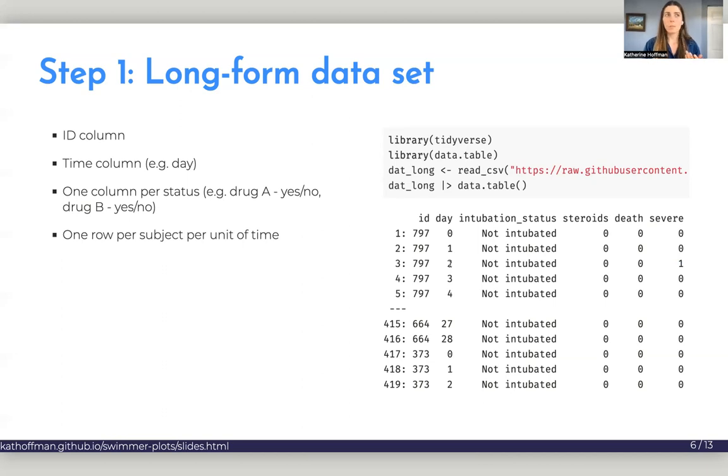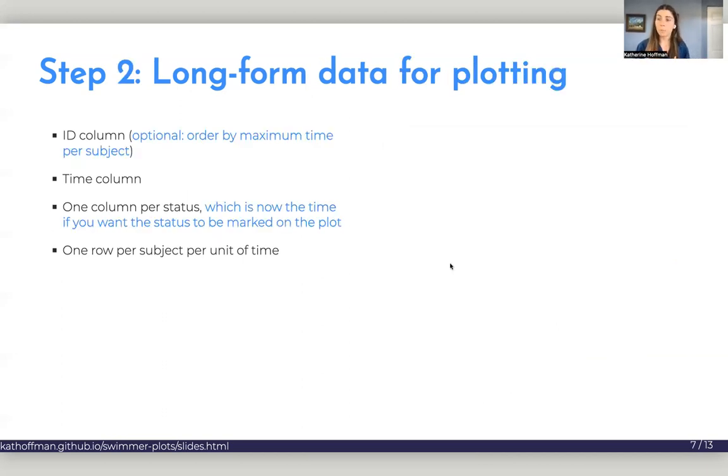So you would probably have a standard data set that looks like this, or something like that, and you'll need to get it ready for plotting for your swimmer plot. And there's two main modifications that you'll need to make to make your data ready for plotting, and that is changes to the ID column and the status columns. The ID column change is optional, but I like to refactor or reorder my ID column by the length of time that my subjects are in my study so that it's a little easier on the eye to look down and see a nice descending order of length of stay or length of study time.